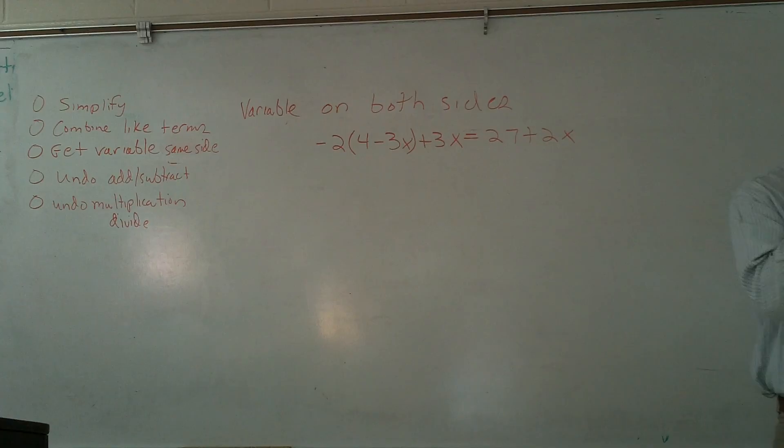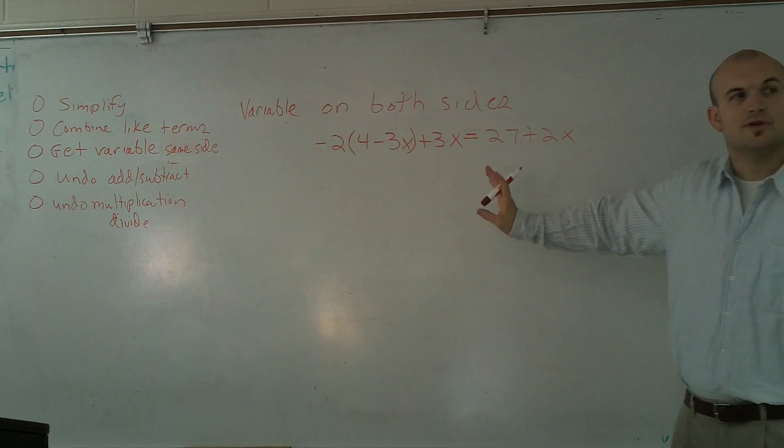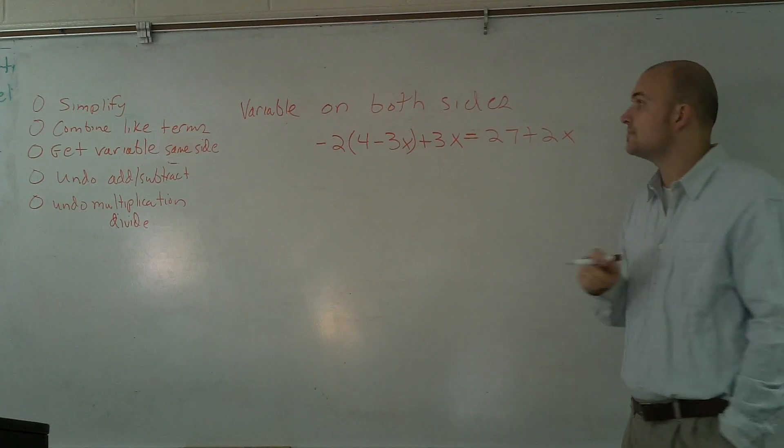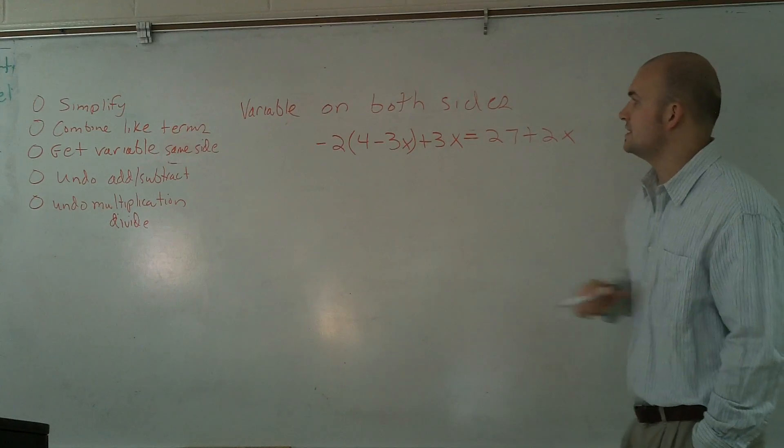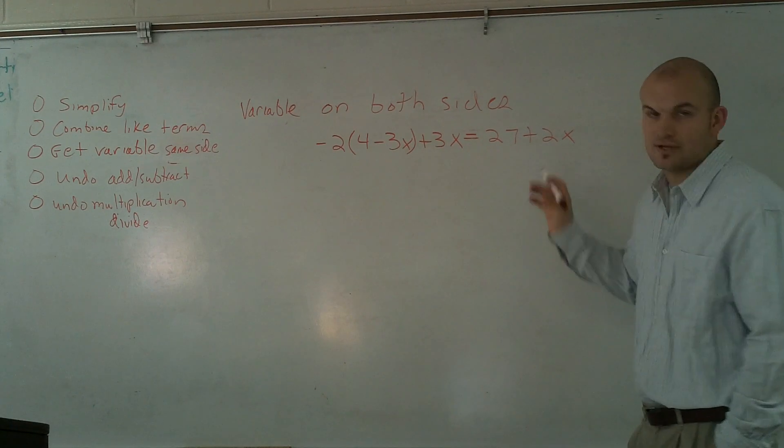All right, what I'd like to show you is how to solve an equation when you have variables on both sides, and you also have to simplify. So, when given this problem, negative 2x times the difference of 4 minus 3x plus 3x equals 27 plus 2x.